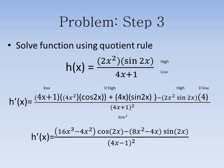This will give us our final answer of 16x cubed minus 4x squared times cosine 2x, minus 8x squared minus 4x times sine 2x, all over 4x minus 1 squared.